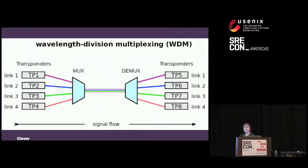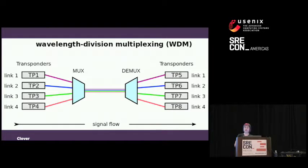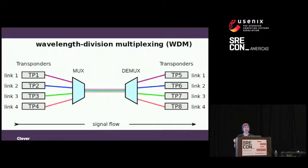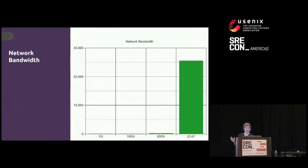Many modern optical systems can have 128 different colors or wavelengths of light, each at 200 gigabits per second. That's over 25 terabits for a single cable. So now on a single tiny little strand, you can get a lot of data. I also find terabits a little hard to comprehend — let's go back to this chart for scale.